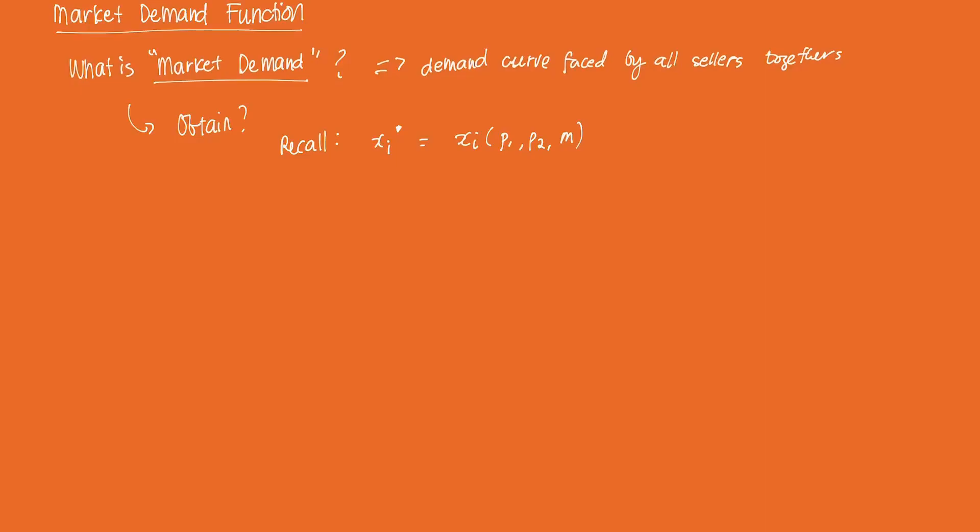But to get market demand, suppose we have H consumers. Essentially, what we're going to do is we're just going to sum up our market demand, that's QD...